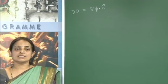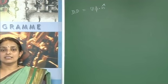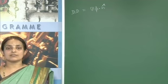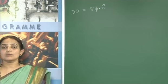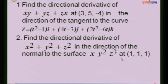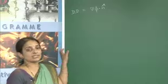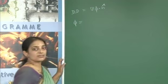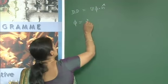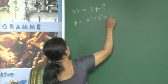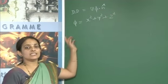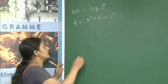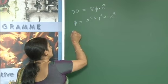Let us take the next example. Find the directional derivative of x² + y² + z² in the direction of the normal to the surface xy²z³ at (1,1,1). Our φ is x² + y² + z². Let us find grad φ.